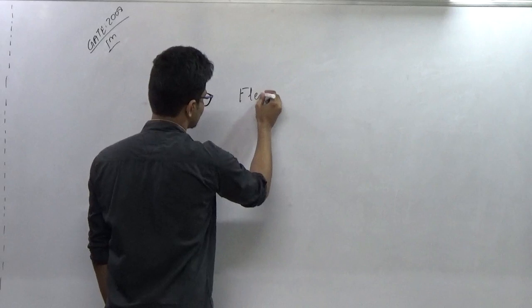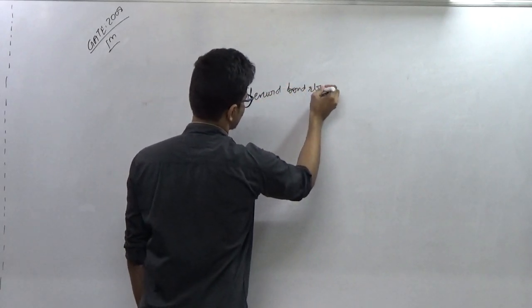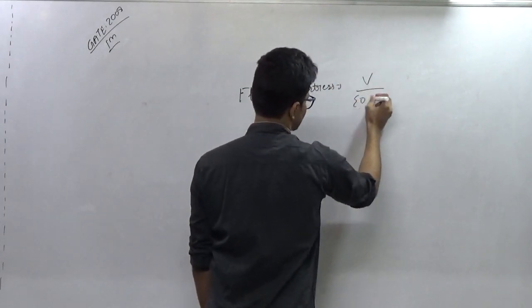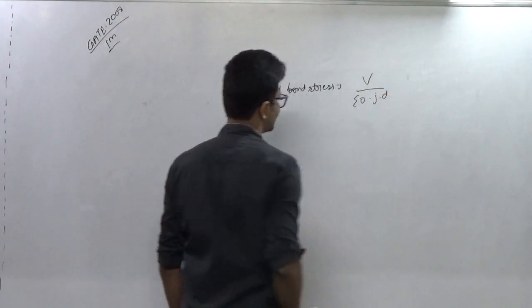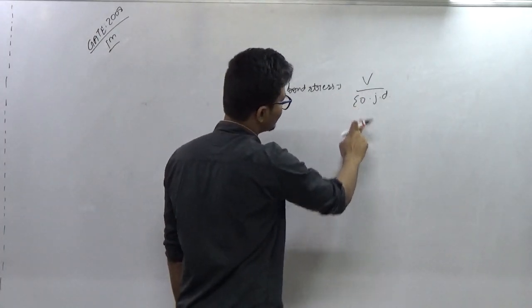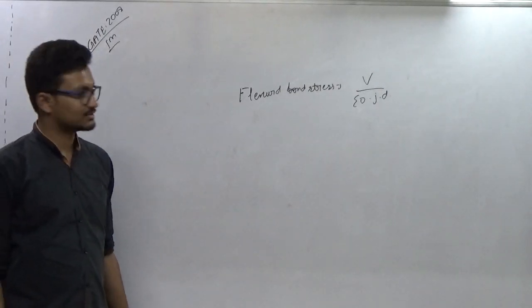The flexible bond stress is given by V over summation O times J times D. Here V is the design shear force, summation O is the perimeter of the bars, J is the lever arm coefficient, and D is the effective depth.